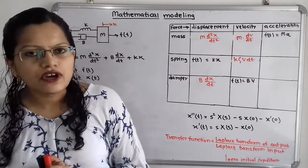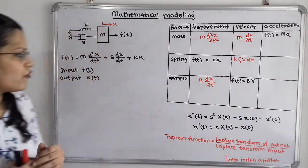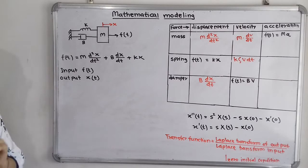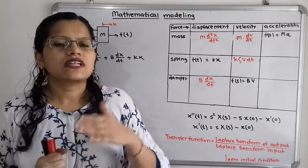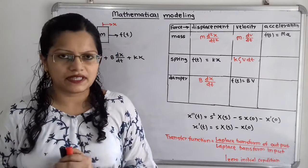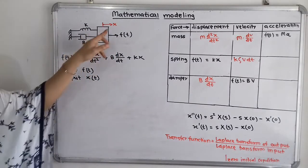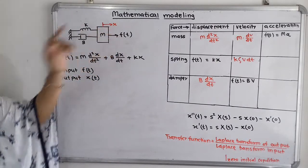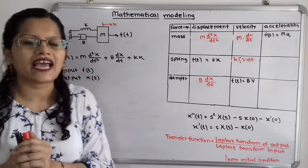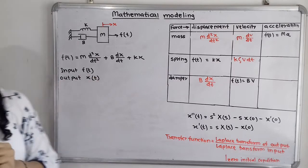Now, f(t) is the applied force and this is nothing but the input, and this input varies with respect to time t. The output is nothing but the displacement, which also varies with respect to time t. So we write the output as x(t).